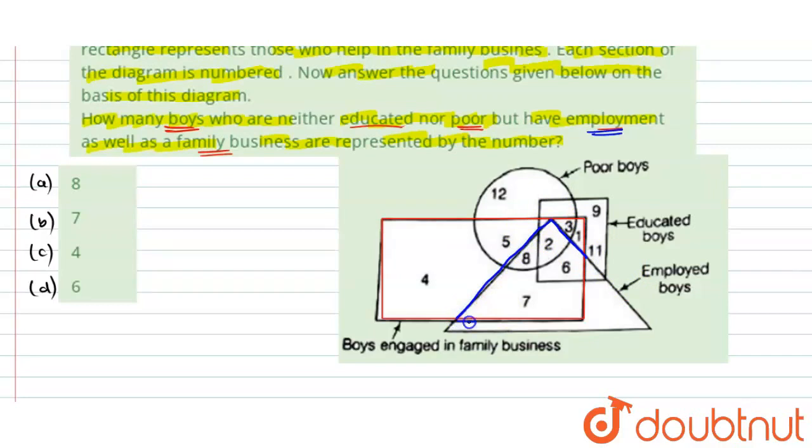The overlap is between the rectangle and triangle. Now, we need those who are not educated, so non-educated means we exclude those in the square. So we cut out that entire portion.